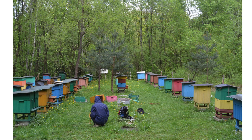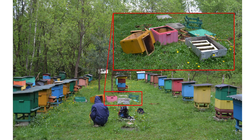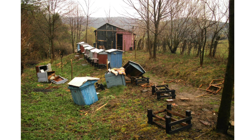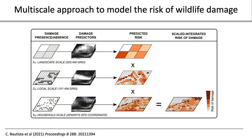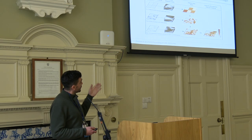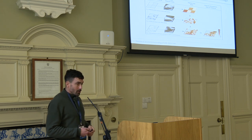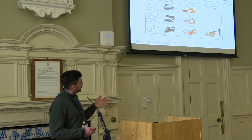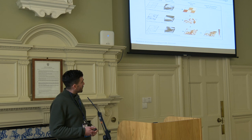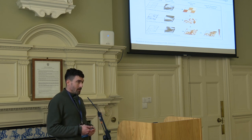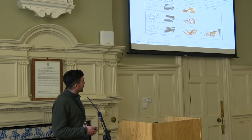We applied the framework at three different scales. The broad one is the landscape scale at five-kilometer resolution. The intermediate one we call the local scale at one-kilometer resolution. The fine scale we call the household scale, using the apiaries' GPS coordinates and predicting at 250-meter resolution. These are nested resolutions.